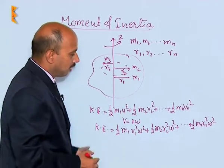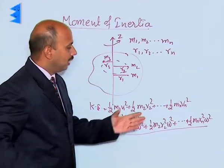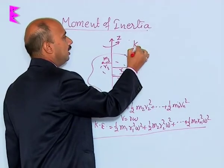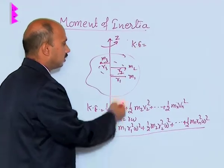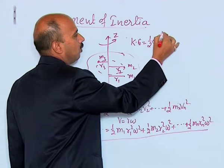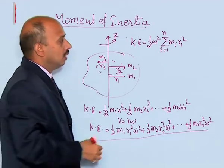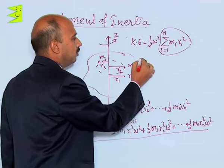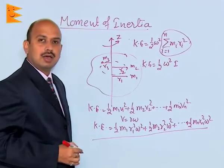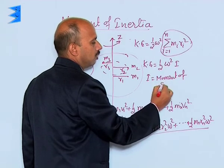Now, see here in this case omega is constant. So we can factor these terms: kinetic energy equals half omega squared times the summation from i equals 1 to n of mᵢ rᵢ squared. This quantity is represented by I, so kinetic energy equals half omega squared times I, and this I is known as moment of inertia.